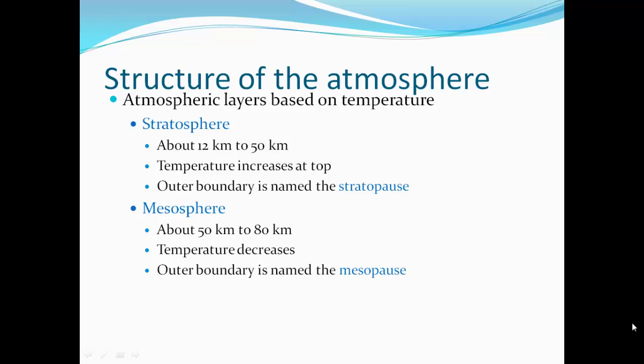The stratosphere extends from about 12 kilometers to 50 kilometers, where temperature increases toward the top. Its outer boundary is named the stratopause. The mesosphere extends from about 50 kilometers to 80 kilometers, where temperature decreases. Its outer boundary is known as the mesopause.